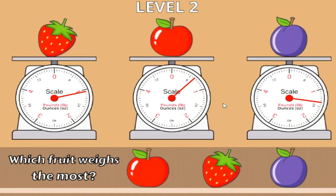Same thing with this level. There's one fruit per scale and we can tell that, again, the plum weighs more than the apple and the other fruit which is a strawberry.